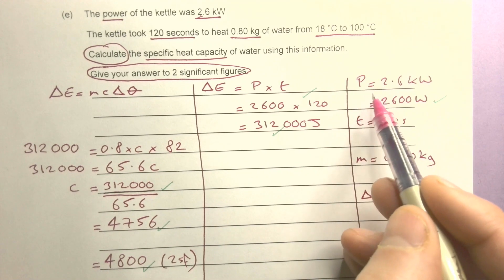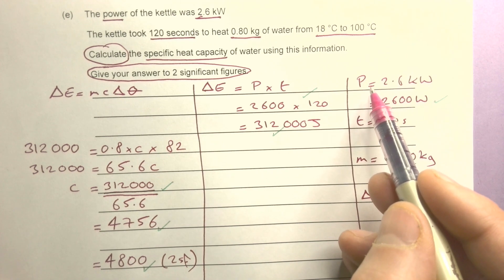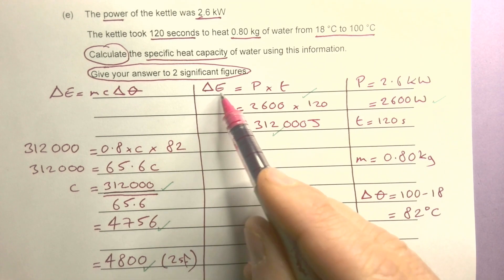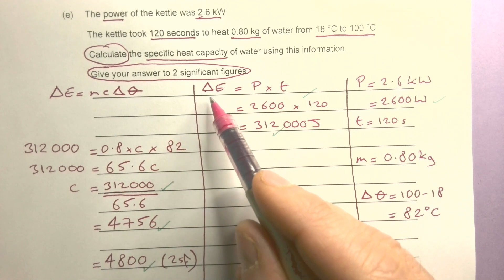Whenever you see those, you'll have the equation or it'll be on the equation sheet. You can calculate the energy. And don't be put off by the triangle, the delta symbol - that just means change in.